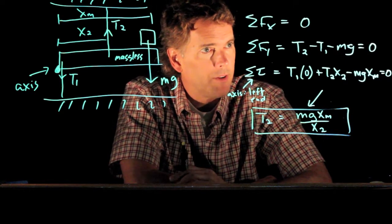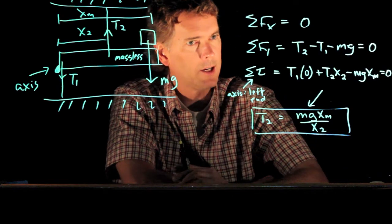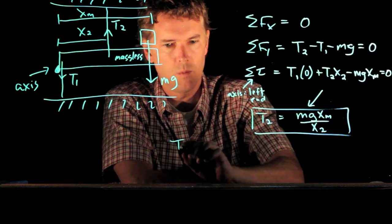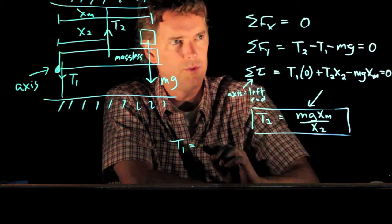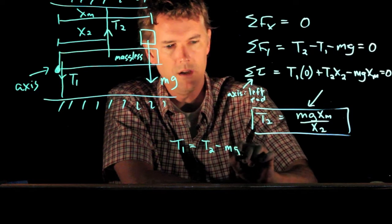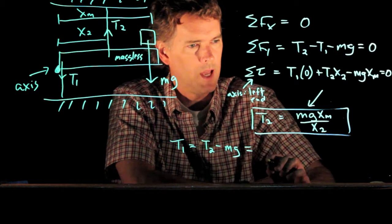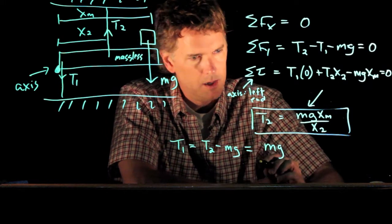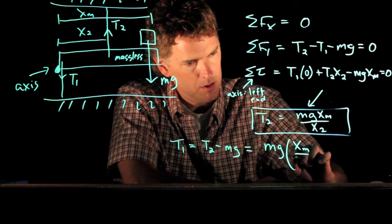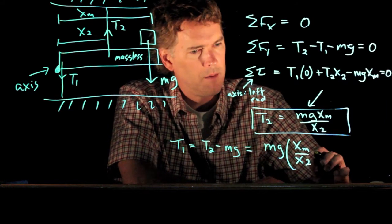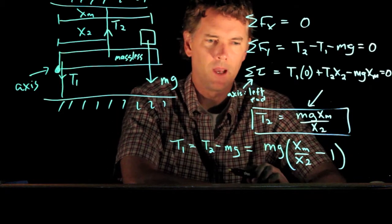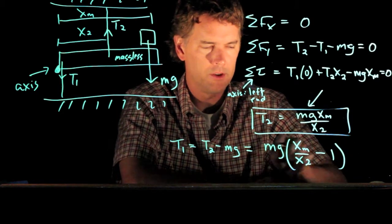And now if I want to solve for the tension in cable 1, I go back to the first equation. And the first equation says T1 is equal to T2 minus mg. And so this becomes mg times xm over x2 minus 1. Okay. We just put all those terms together. You can double check my math.